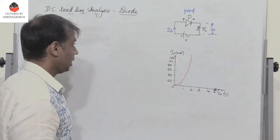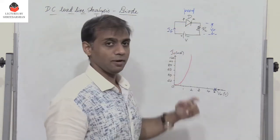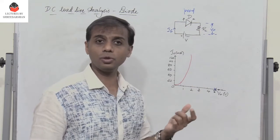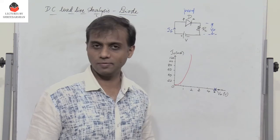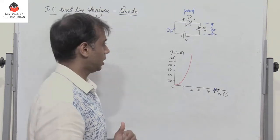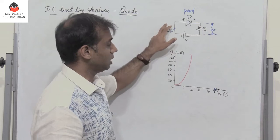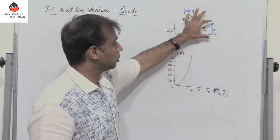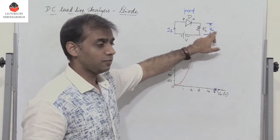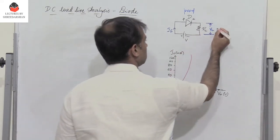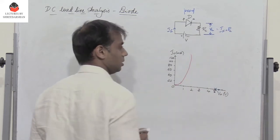Let the voltage across the diode be VF, and VF is equal to the cut-in voltage or knee voltage, which is approximately equal to 0.7 volts in case of a silicon diode. Let IF be the current flowing in the circuit. So the voltage across RL is VL, which is nothing but equal to the current IF times the resistance RL.